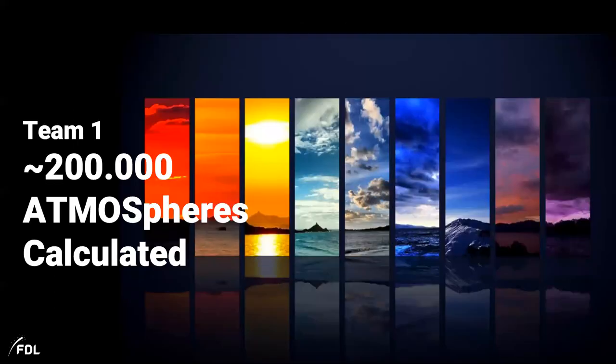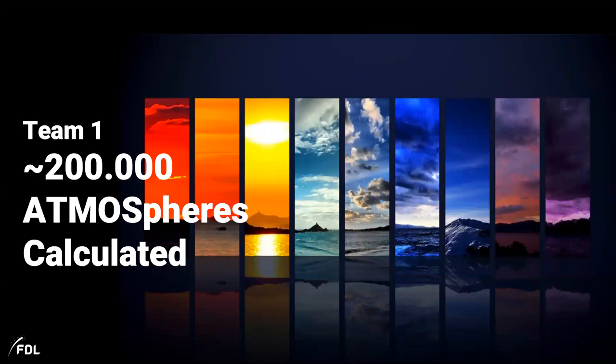So what team number one did, they use the ATMOS code, which probably many of you already know, a couple of you already using. So what they did, they basically computed 200,000 atmospheres with that VPL ATMOS code. And in order to do that, they used this VPL ATMOS code that, as I mentioned, many of you know. So they translated it into Python, which might already be interesting for some of you using it in that pyATMOS version.